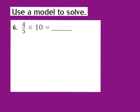Now let's take a look at question number 6. Once again we're going to use a model to solve. For question 6, they give us 4/5ths times the whole number 10. My first step is to identify the denominator in the given fraction — in 4/5ths, my denominator is a 5. So I'm going to divide the whole number 10 into 5 equal groups. I know that 10 divided by 5 is going to give me 2, so I'm going to have 5 equal groups with 2 in each group.